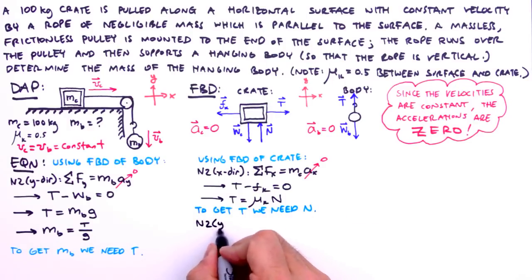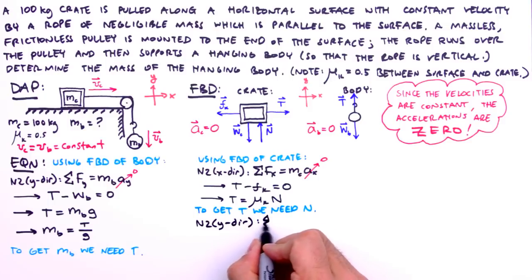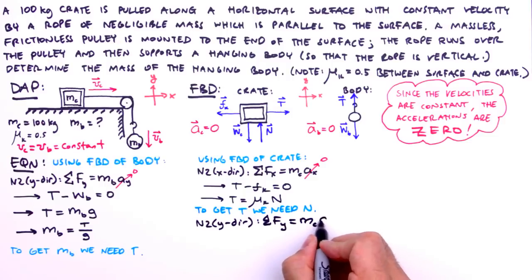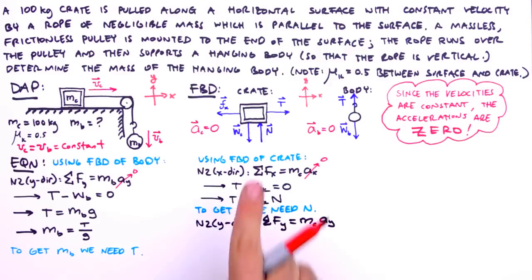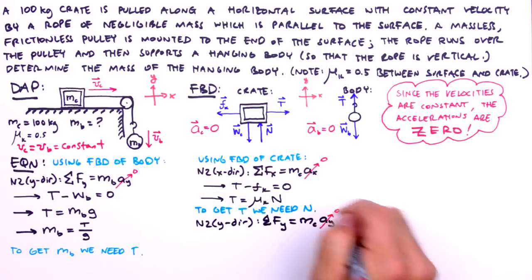So let's try n2 in the y direction for the crate. The sum of the forces along the y direction equal the mass of the crate times the acceleration of the crate in the y direction. You know what we're going to do next.